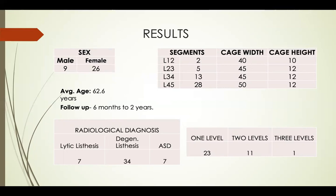The respective segments and their average cage height and width are as follows: L1-2 had 2 segments, L2-3 had 5 segments, L3-4 had 13 segments, and the maximum were at L4-5 with 28 segments. We had 23 cases of 1-level, 11 of 2-level, and 1 of 3-level OLIF fixation.